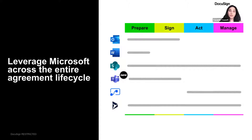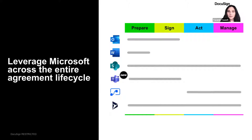So together, you can prepare agreements leveraging Outlook, Word, or Dynamics 365, sign agreements with the new Microsoft Teams integration, then act on agreements with Power Automate, and then lastly, manage all of these agreements with SharePoint or Dynamics 365.